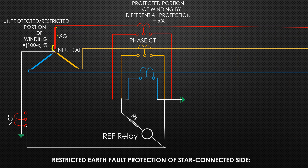By differential protection scheme, 90 to 95 percent of transformer winding is protected. The remaining 5 to 10 percent is left unprotected. When a fault occurs very near the neutral point of the transformer, the voltage available for driving earth fault current is small.